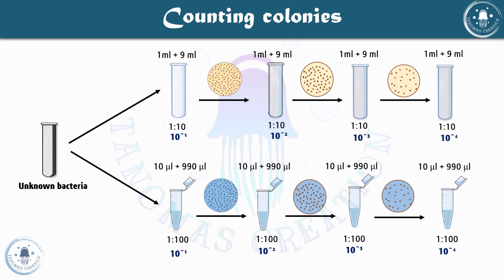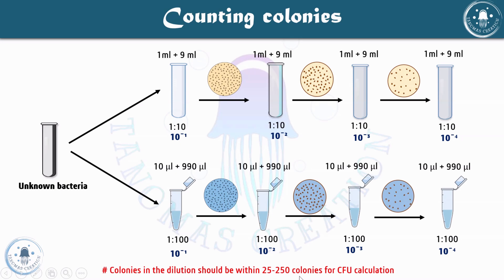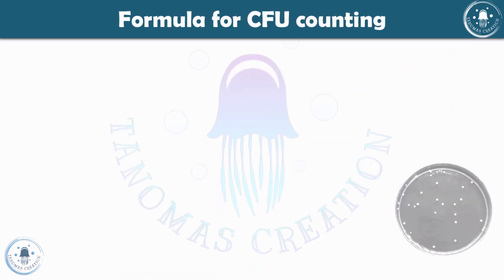There is one rule you need to follow: the colonies on the dilution plate should be within 25 to 250 colonies for CFU calculation. You need to have the colony count between 25 and 250 — not greater than 250 and not less than 25 — in order to get the precise amount of colonies in your original sample. This will make your calculation easier.